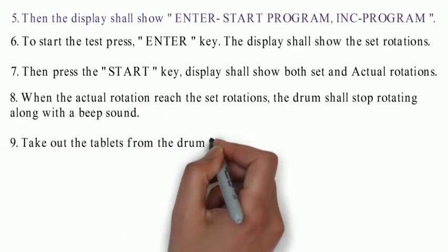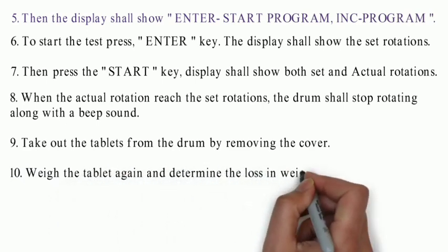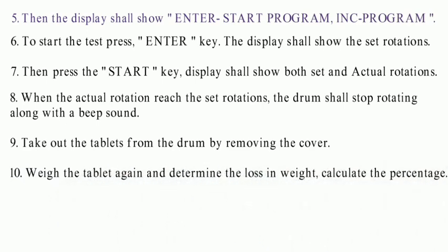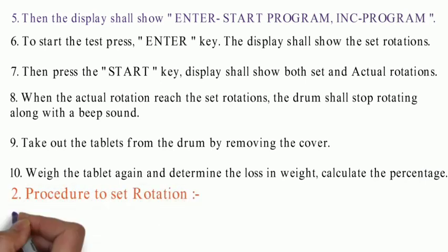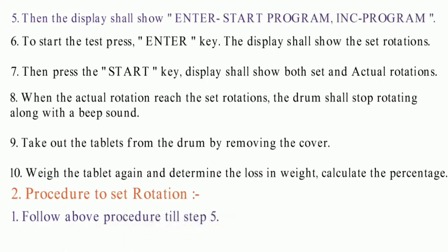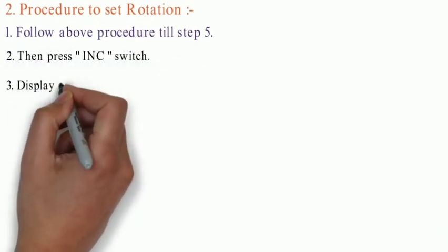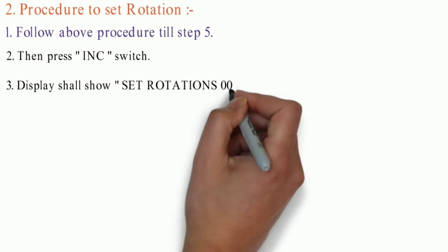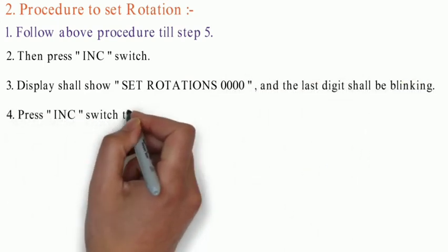When the actual rotation reaches the set rotation, the drum shall stop rotating along with beep sound. Take out the tablets from the drum by removing the cover, weigh the tablets again, determine the loss in weight and calculate percentage. Procedure to set rotation: follow above procedure till step 5, then press INC switch. Display shall show Set Rotations 0000 and the last digit shall be blinking.